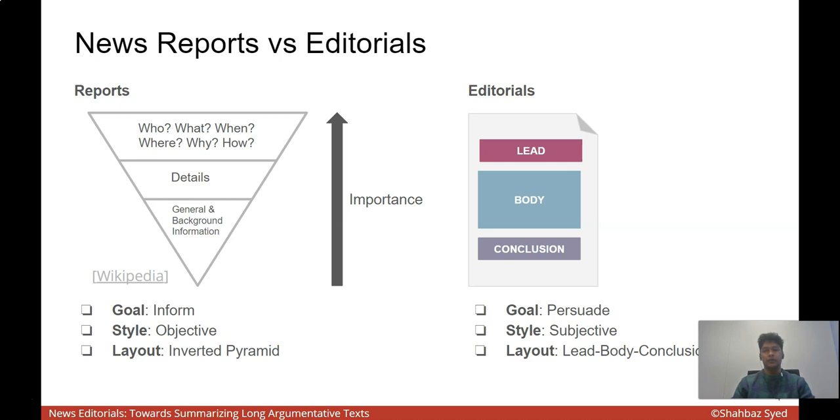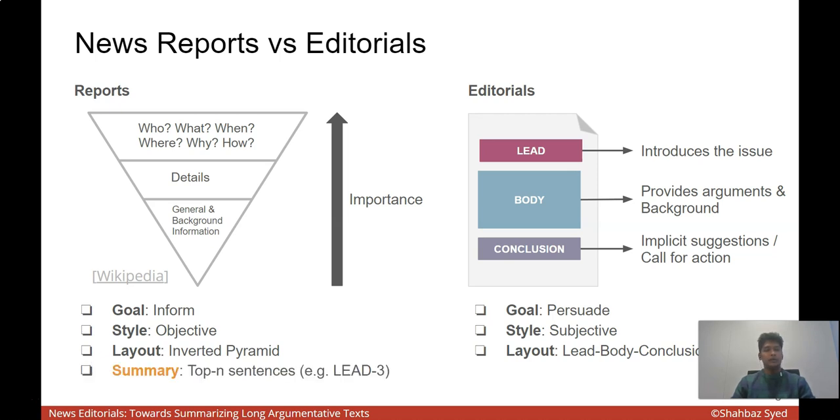In comparison, the goal of an editorial is to persuade you. It is written subjectively and contains many arguments. In terms of layout, it has three main sections: the lead, the body, and the conclusion. The lead introduces the issue tackled by the editorial. The body is where most of the reasoning is developed by providing arguments and enough background. In the conclusion, the author provides a subjective assessment of the whole situation and may include some suggestions or a call for action. Looking at these differences, one could effectively summarize news reports by just selecting the top few sentences. This property is also seen in many state-of-the-art summarization models that are biased towards the lead position. Applying them directly to summarize editorials may not be ideal. We need a different approach.